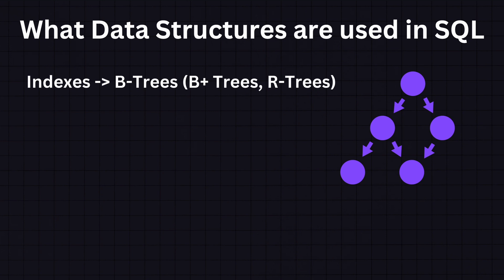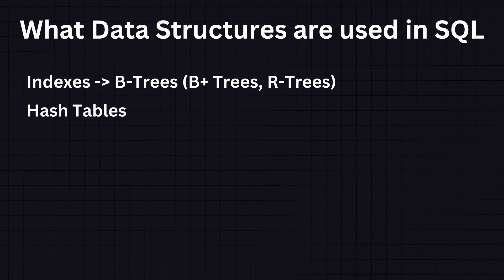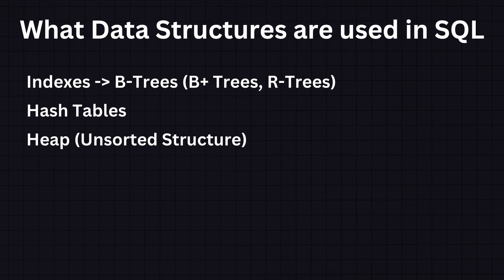SQL databases also use hash tables with a hash function to map keys to specific positions in an index. Hash tables are very efficient for point queries where an exact match is known, but they are not efficient for range queries and do not store data in sorted order. In some simple cases, particularly for small tables or temporary workspaces, a database might use a heap structure, meaning data is unsorted and inserted wherever there is space. Heaps are fast for insertion but can be inefficient for queries as they might require a full table scan.